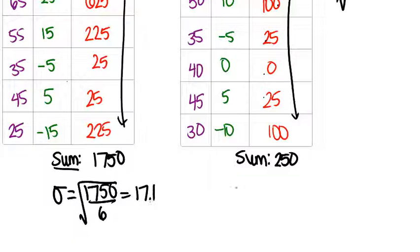For Brand B, we take 250 divided by 6 and then take the square root of that, and we get approximately 6.5. So those are our standard deviations.